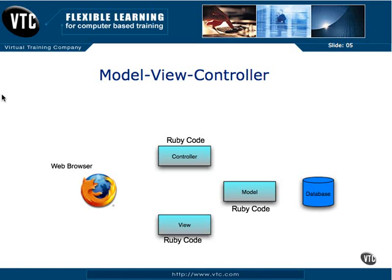The controller can be viewed as the code that orchestrates all of this. Primarily, this is what the user via the web browser interacts with — the code inside the controller. With Ruby on Rails, these three parts exist as separate files. The controller and the model are Ruby code and will be .rb files. The view is going to be either an .rhtml file, which is an HTML file with embedded Ruby code, or it could be an .rjs, which is a Ruby JavaScript file.